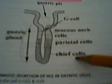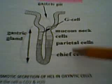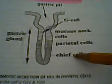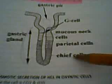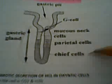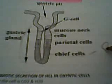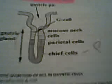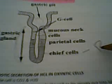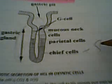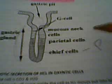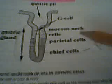The chief cells secrete pepsinogen, and they are located deep within the tubular gland.